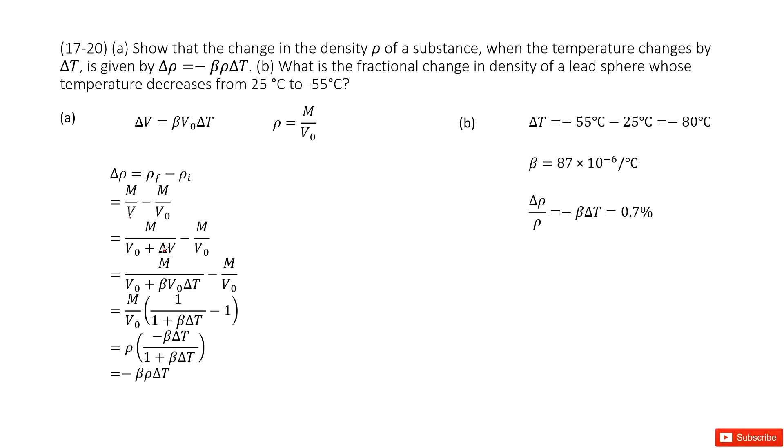And next step, we replace delta V with this function. We have beta V0 delta T. Now for this function, we want to simplify. So we take M divided by V0 out. And then in this bracket, we have 1 over 1 plus beta delta T minus 1. And do calculation. We get the term that looks like this one.